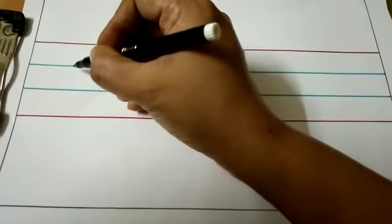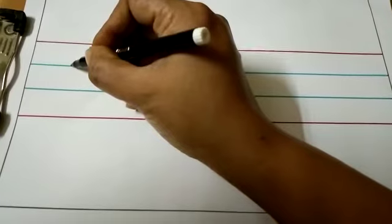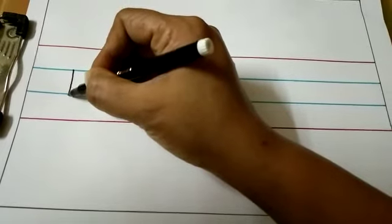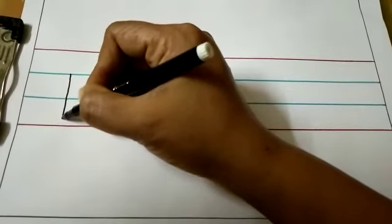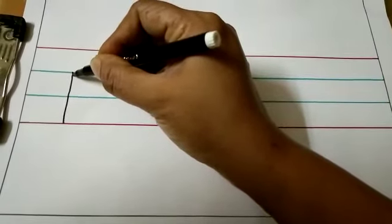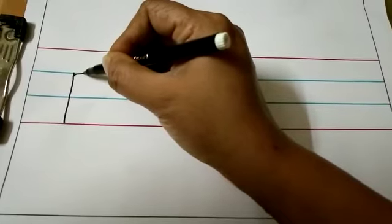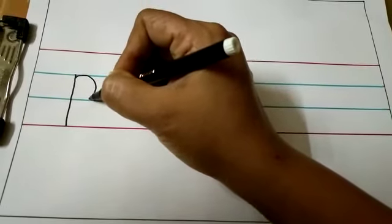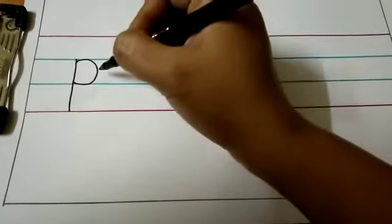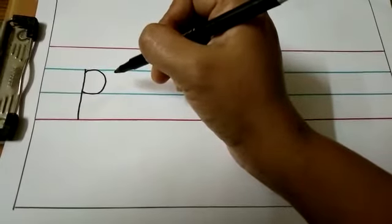I will show you how to write small p. To write this, we will start from the first blue line. We will make a standing line from the first blue line to the second red line. Now we will make a right curve from the first blue line to the second blue line on the right side of the standing line. This is small p.